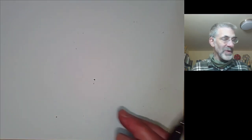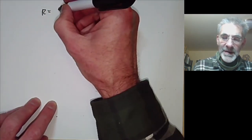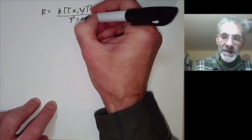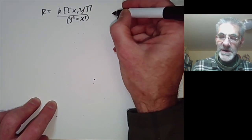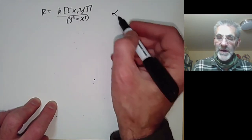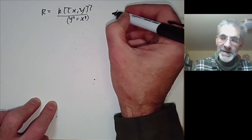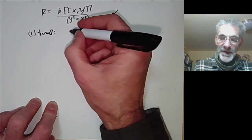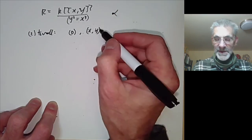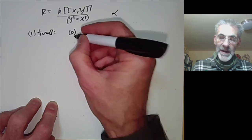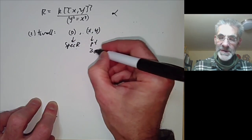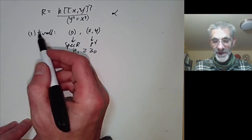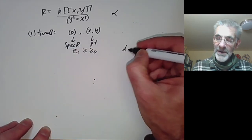For a quick example, take the ring R to be the power series ring in two variables quotiented by the ideal y² = x³. The spectrum looks like a germ of a cusp. For the Krull dimension, we have the ideal zero and the ideal generated by x and y, both prime ideals, giving a chain of length 1. This is the maximal chain since the ring has only two prime ideals, so the Krull dimension is 1.